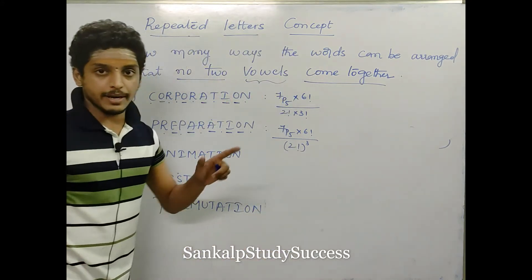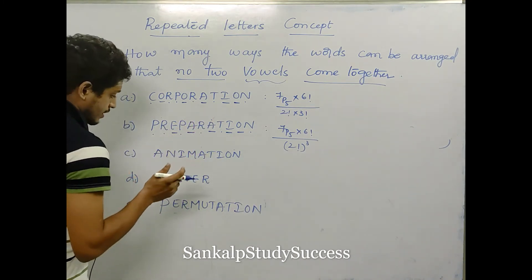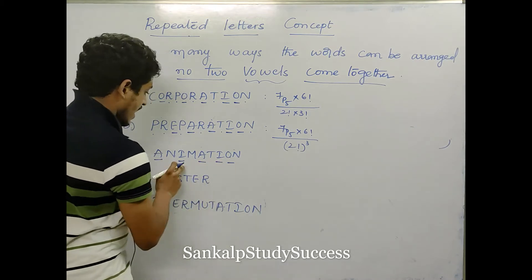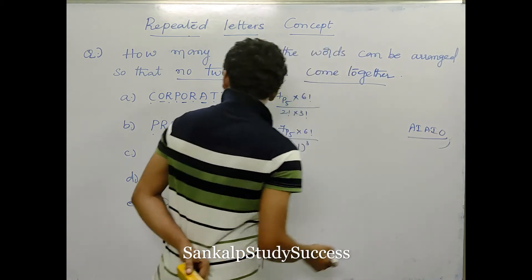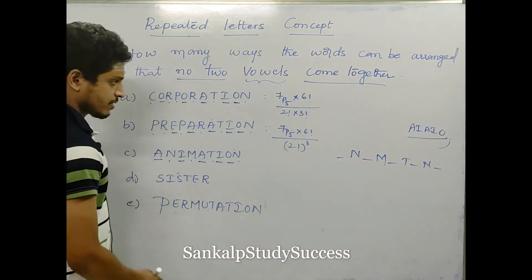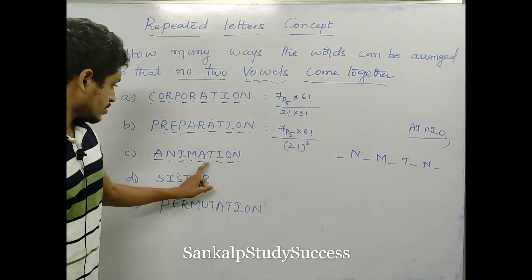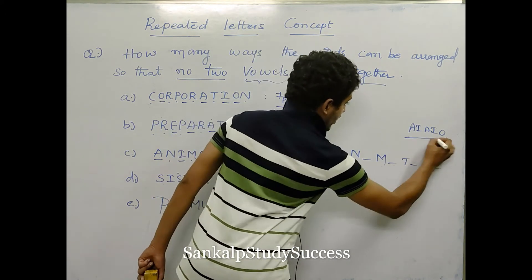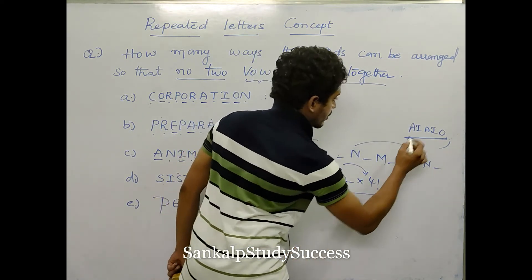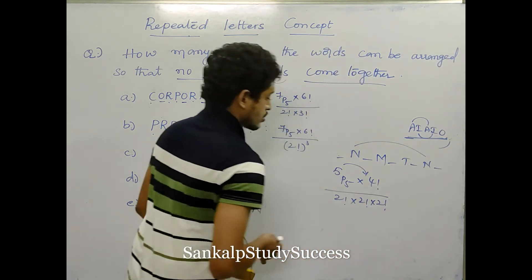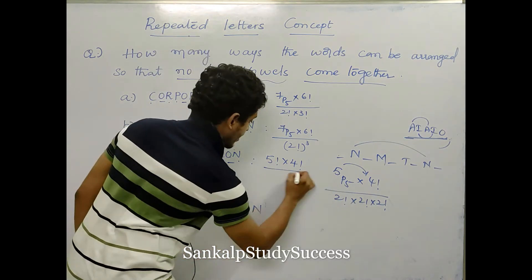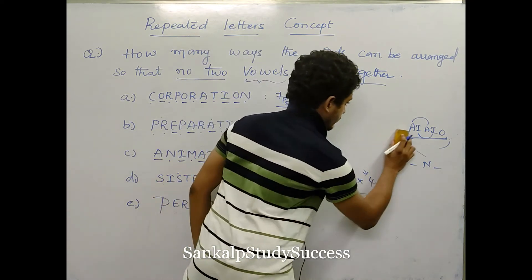Next is ANIMATION — no two vowels come together. The vowels are A, I, A, I, O. The consonants are N, M, T, N. There are 4 consonants giving 5 places for vowels. The answer is 5P5 into 4 factorial divided by 2 factorial whole cube, because A repeats 2 times, I repeats 2 times, and N repeats 2 times.